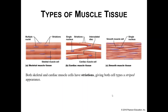As you can see in our image, we have some different appearances of skeletal, cardiac, and smooth muscle. Both skeletal and cardiac muscles have striations, giving them a striped appearance, while smooth muscle has no striations.